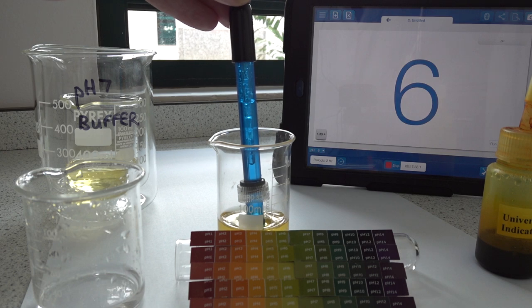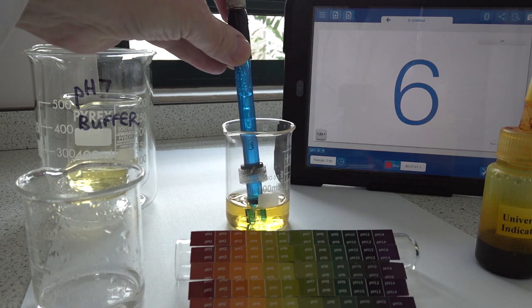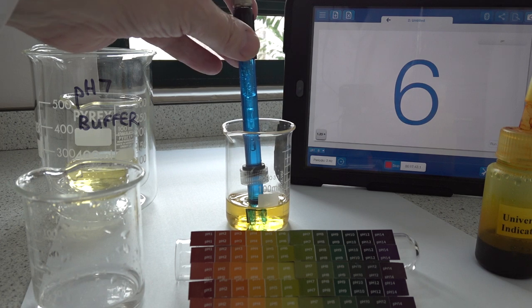So the pH probe is giving a reading for the first solution of around pH 6.